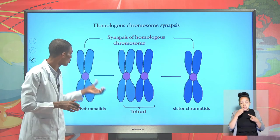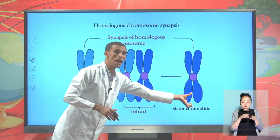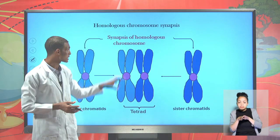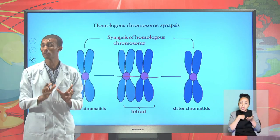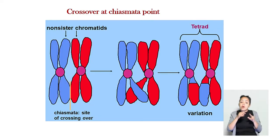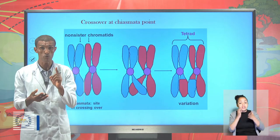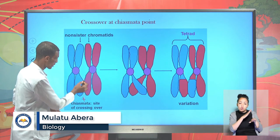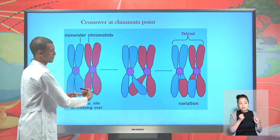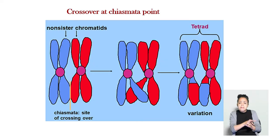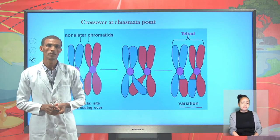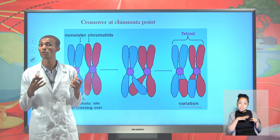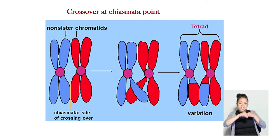During Prophase I, homologous pairs of sister chromatids — called bivalents — find each other and pair up. The copy and original are held together by the centromere. Homologous pairs come together and exchange their chromosomal or genetic segments through crossover, which takes place only during Prophase I at chiasmata points. As a result of this crossover during Prophase I, there is genetic variation introduced, bringing about daughter cells that differ genetically from the original parent cell.